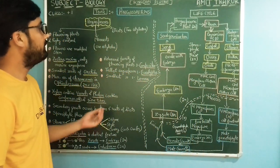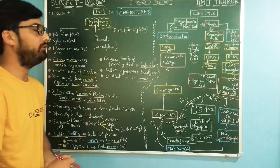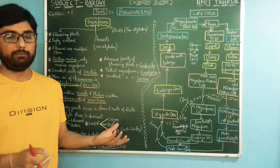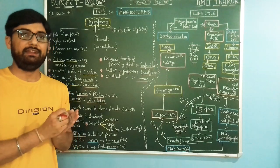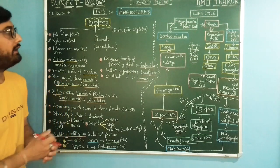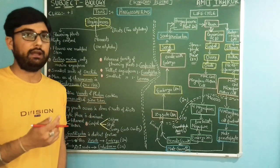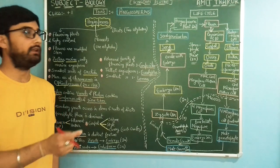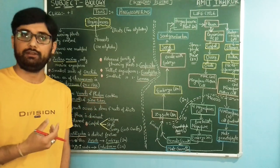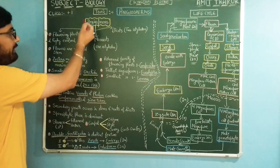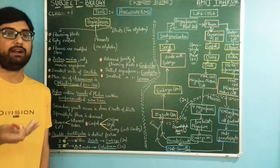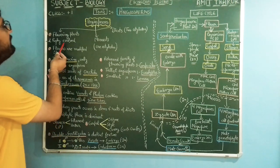Welcome back students. The next topic is angiosperms. Angiosperms are highly evolved flowering plants. The seeds of angiosperms are enclosed inside a fruit. In the case of gymnosperms, seeds were naked and not enclosed in fruit, but in the case of angiosperms, fruits are formed and seeds are present inside the fruit. Angiosperms are seed plants, flowering plants, and they are highly evolved.